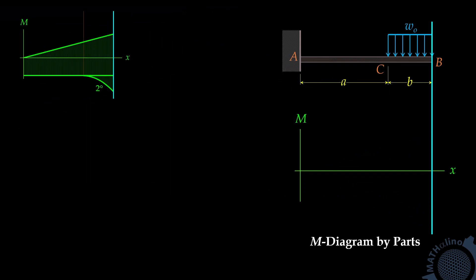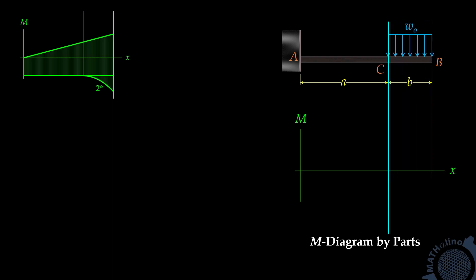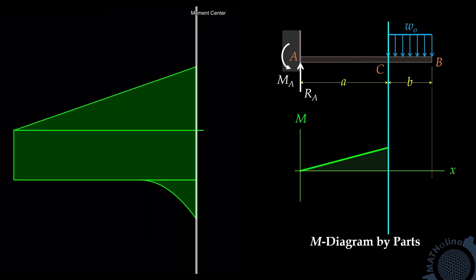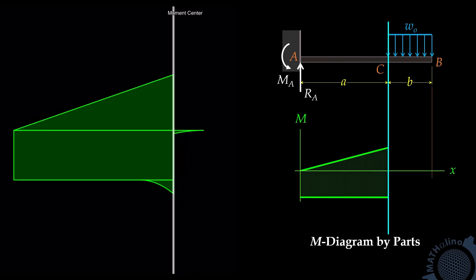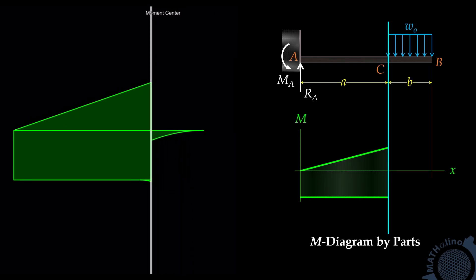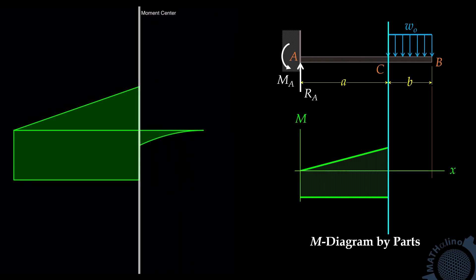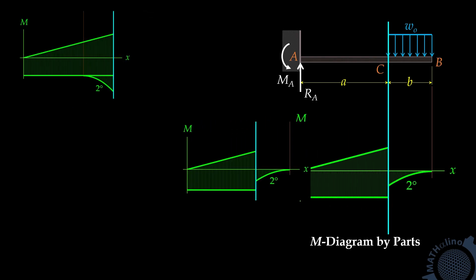The moment diagram due to WO alone about point B is this parabolic spandrel. Now, what will be the shape of our moment diagram by parts if we are going to move our moment center to point C? Again, for this moment center, we need to find the reactions first. The moment diagram due to RA about point C is this triangle, the moment diagram due to MA about point C is this rectangle, and the moment diagram due to WO about point C is this parabolic spandrel.